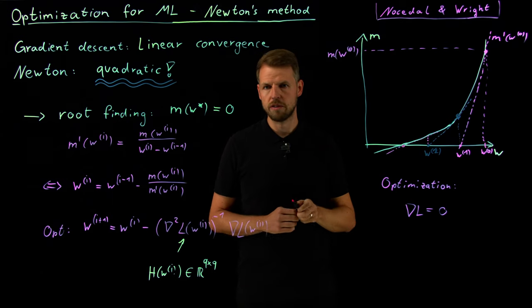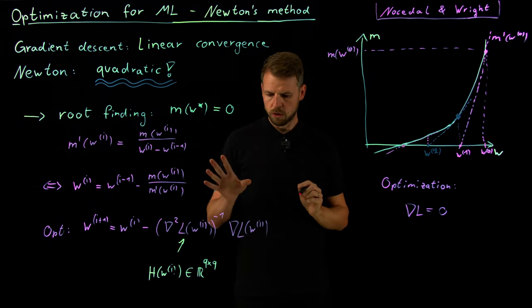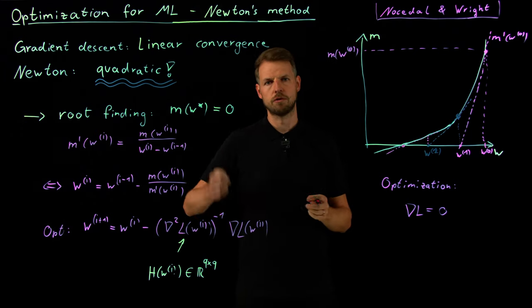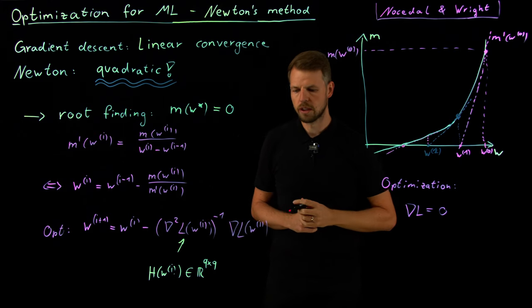And so in fact what is even more important is that the number of correct digits increases or doubles every iteration. So this one in fact has quadratic convergence. We are not going to go into the proof. As I said in this brilliant book, you can find all the details. But what's really important is that this is the gold standard of optimization in terms of how few iterations you need for the algorithm to converge.